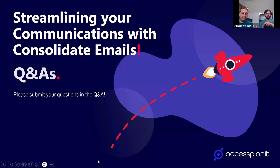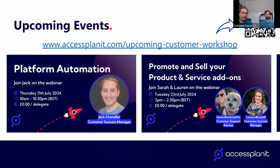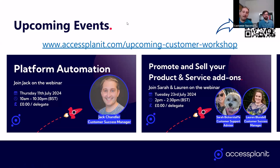That's all the questions we've got for now. We'll leave the Q&A box open for a few more minutes for any last-minute questions. Just a reminder: we have more upcoming webinars. On Thursday, we've got a platform automation webinar at 10 o'clock in the morning — these are all free to attend. On the 23rd of July at 2 o'clock, there's a webinar relating to products you sell using the products and services module. You can use the QR code on screen to join any of those events, and all recordings are available on the website after each session.